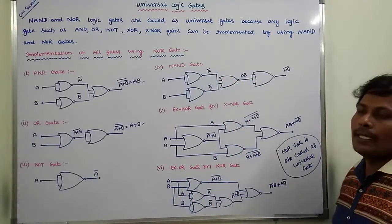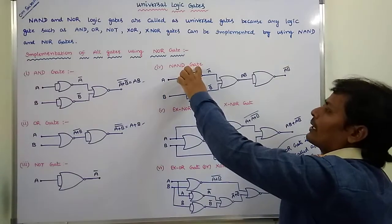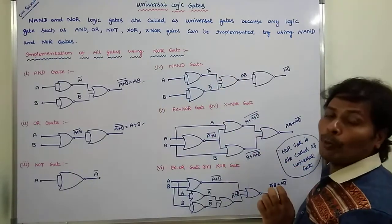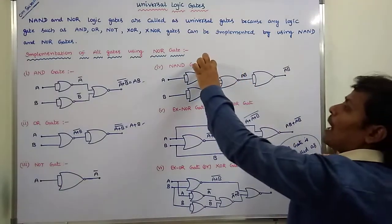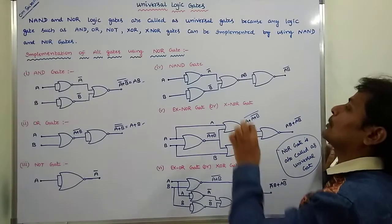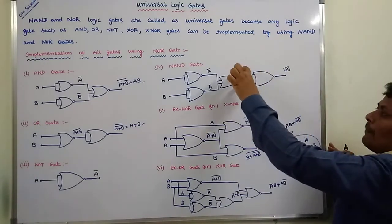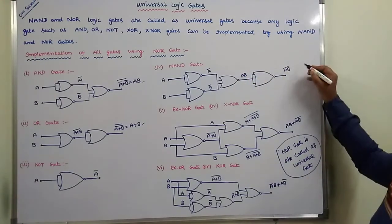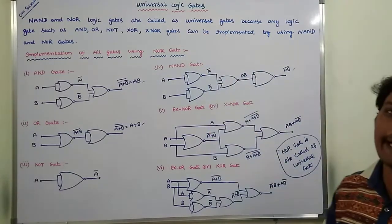Next one, NAND gate. A is applied as two inputs to the NOR gate, then we are getting A bar. B is applied as two inputs for the NOR gate, then we are getting the output B bar. This A bar output and B bar output can be sent as input to another NOR gate, then we are getting AB bar. So AB whole bar is the output of the NAND gate.